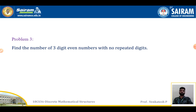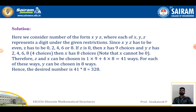Problem 3: Find the number of three-digit even numbers with no repeated digits. We consider a number of the form XYZ, where each of X, Y, Z represents a digit under the given restrictions. Since XYZ has to be even, Z has to be 0, 2, 4, 6, or 8.